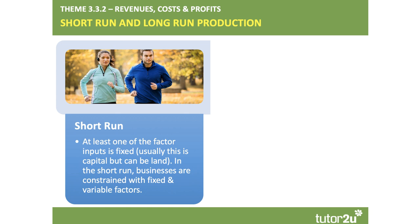Economies of scale relate to the long-run production function. Let's briefly revise the difference in theory between the short-run and the long-run. In the short-run, at least one factor input is held fixed — normally the amount of capital equipment, or the amount of land available for production. In the short-run, businesses are limited and constrained with both fixed and variable factors.